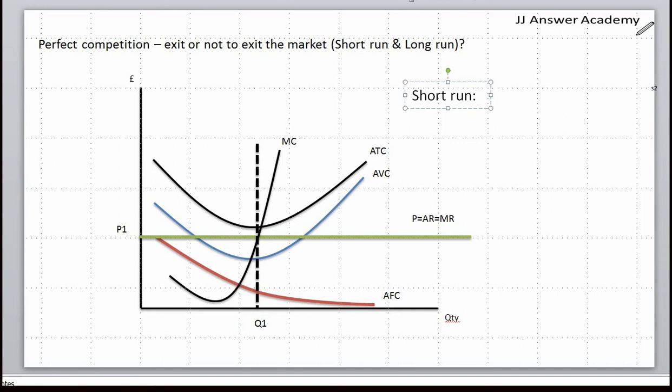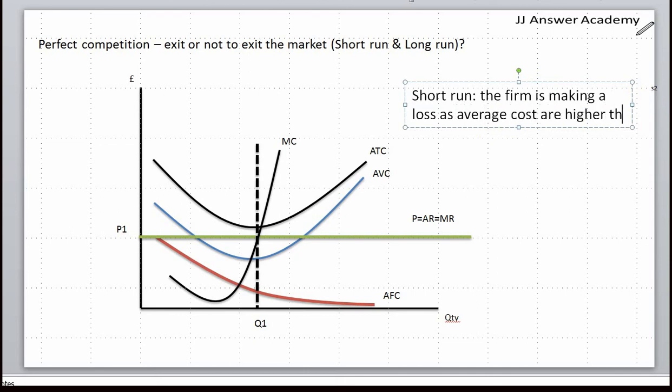The firm is making a loss. And why would that be? As average cost, yes you're absolutely right, as average cost is greater than average revenue at Q1. Should the firm exit the market or stay in the market?